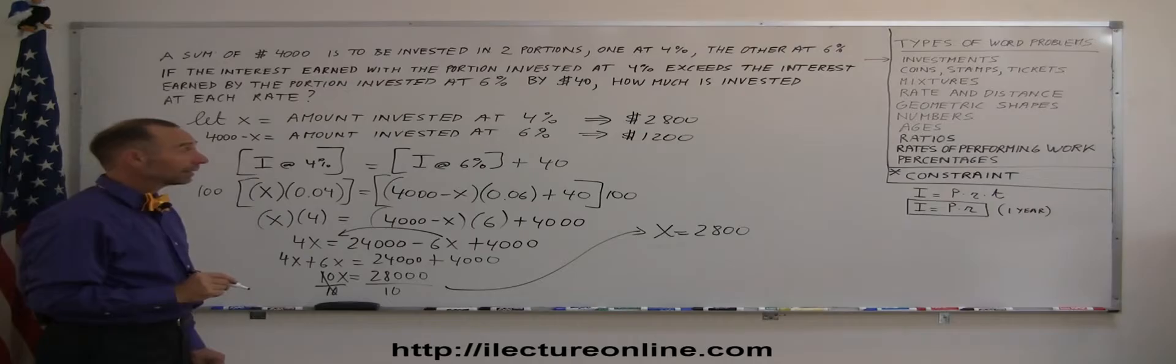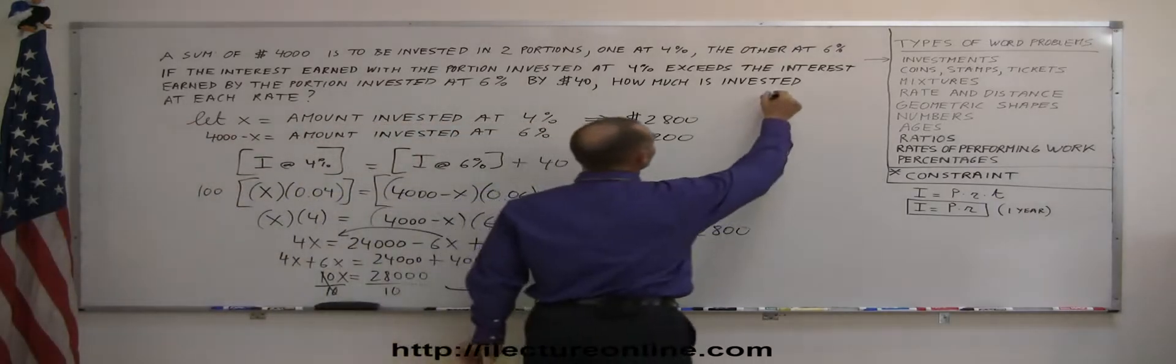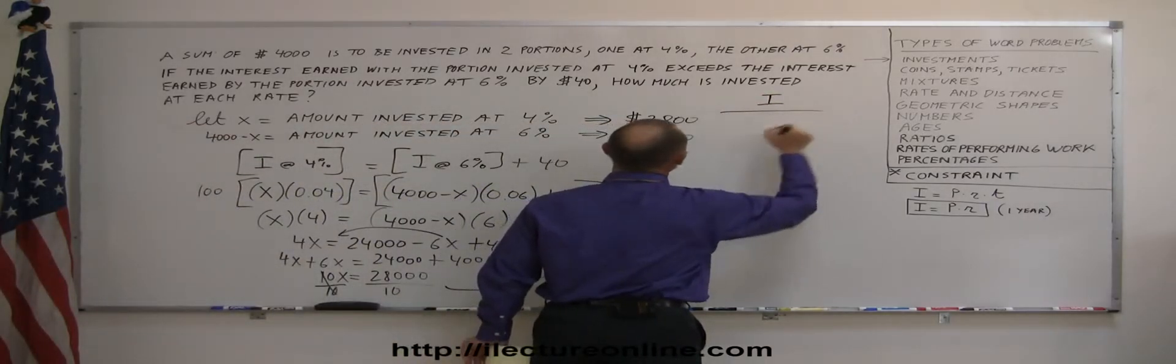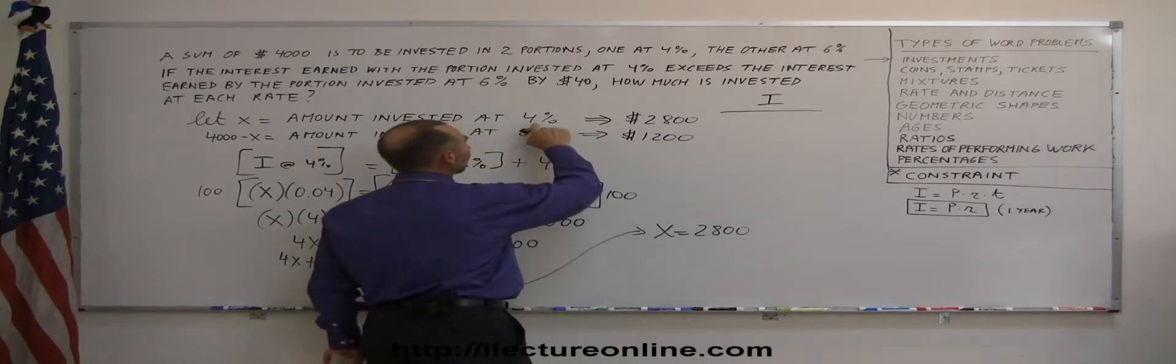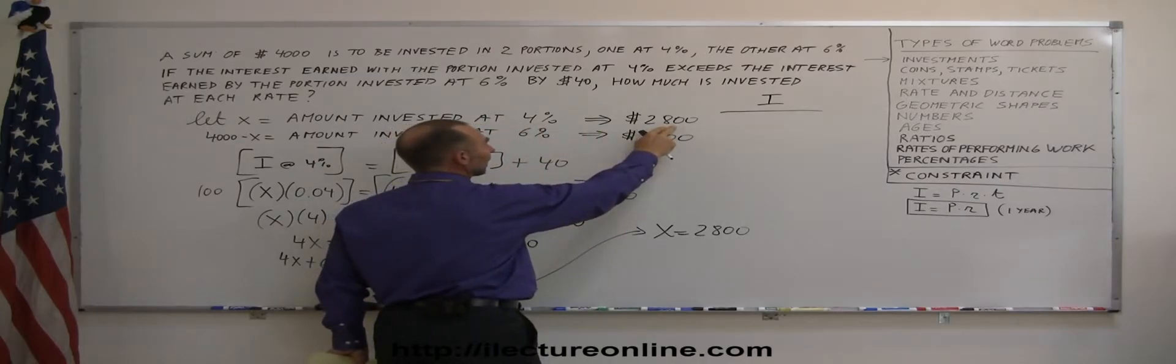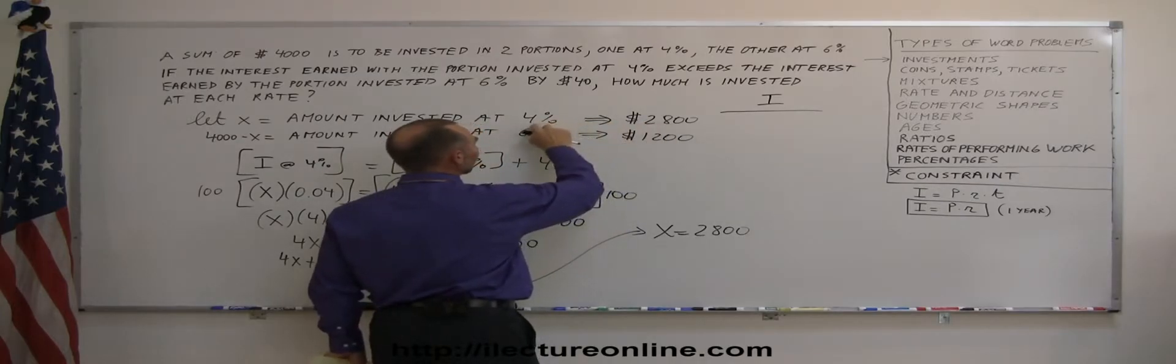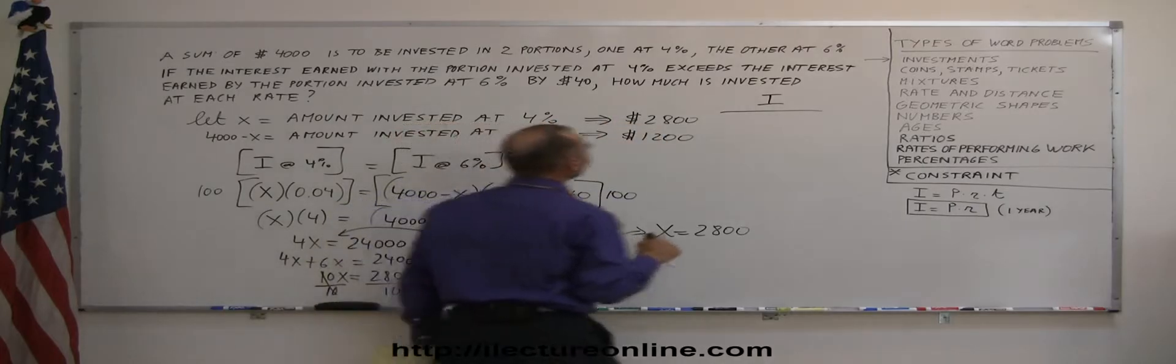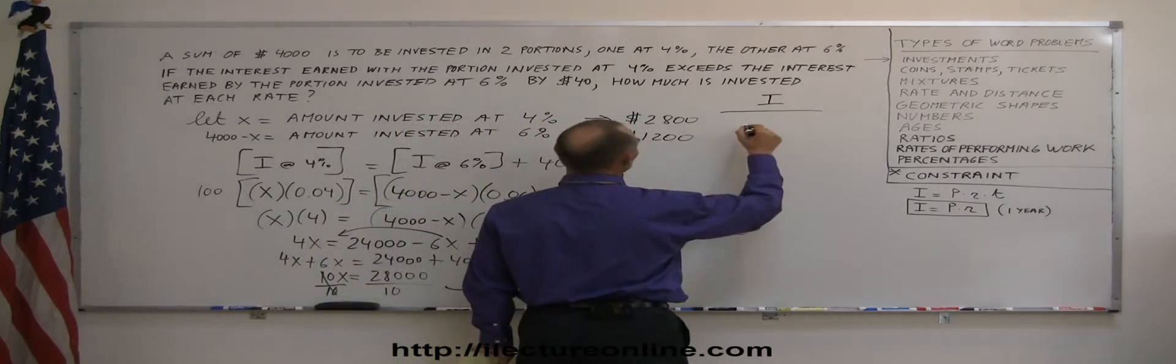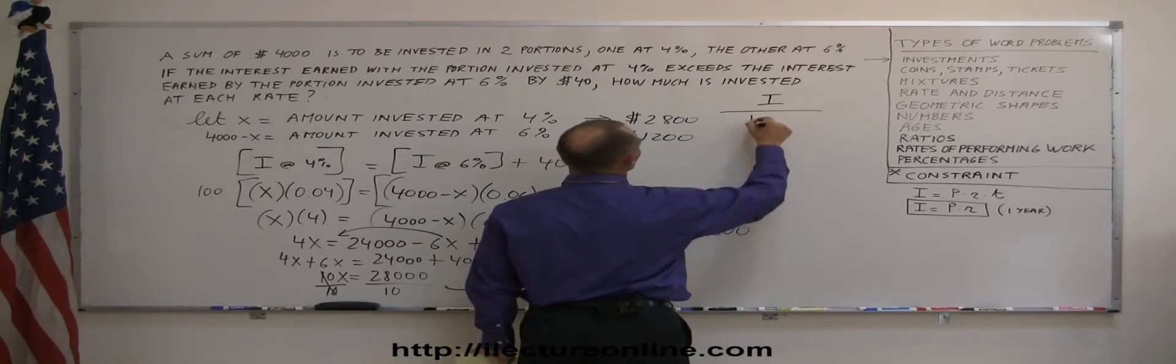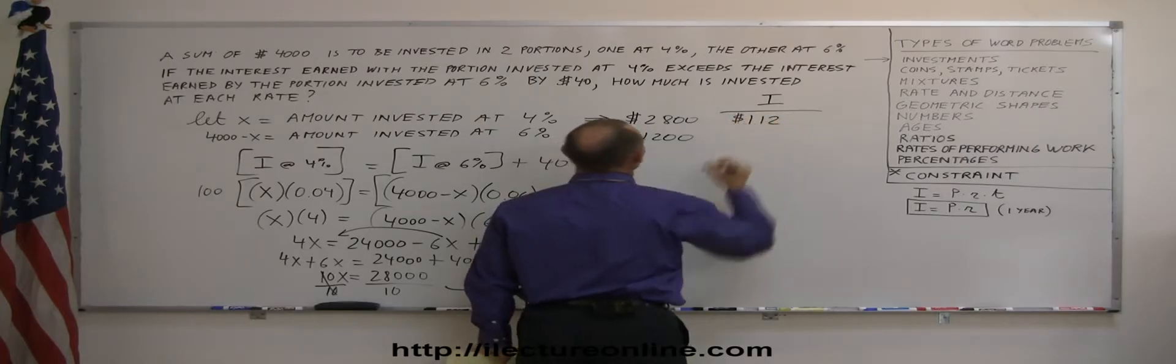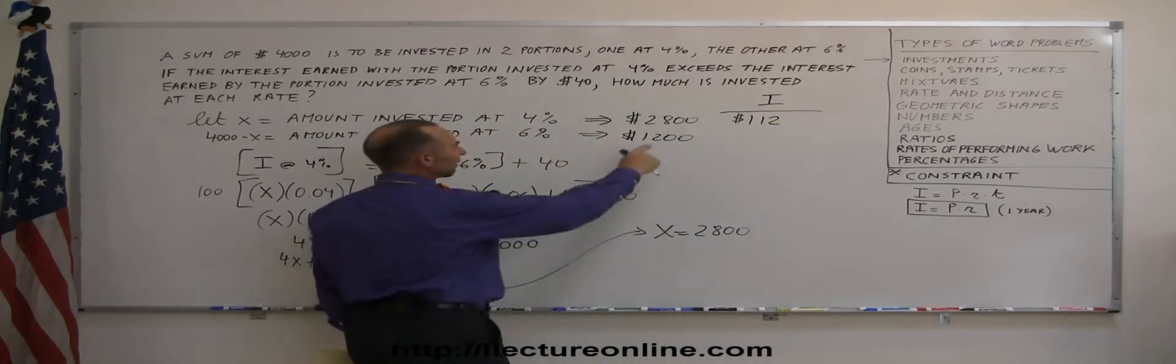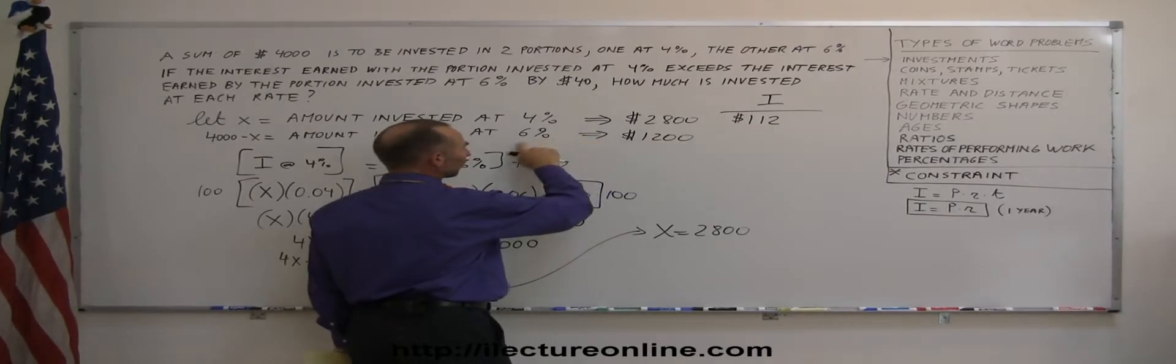Now, just to make sure we did this correctly, what we need to do is figure out how much we earned at each. So, 4%, we invest $2,800 at 4%, so if we multiply 4% times this, we get $112.